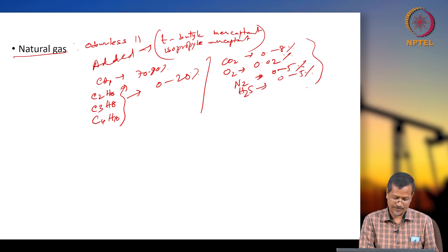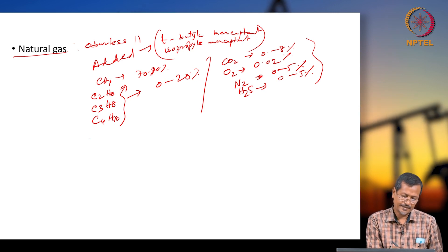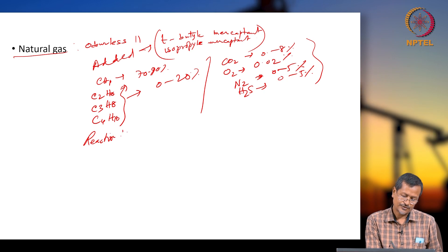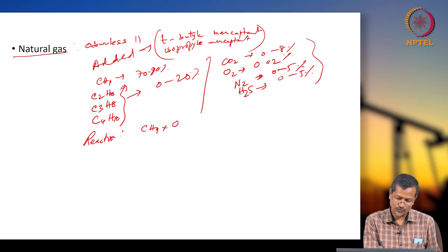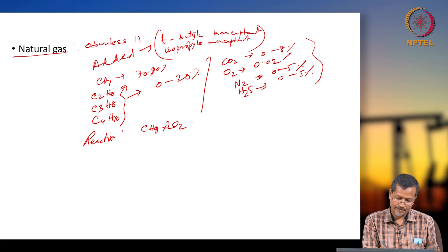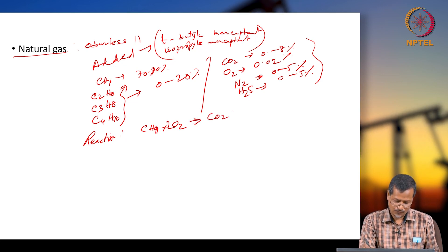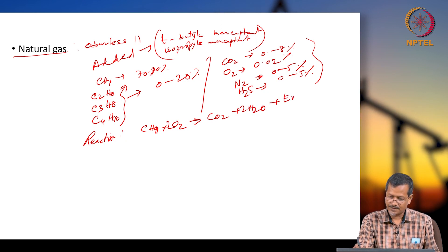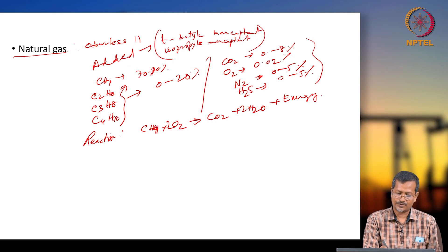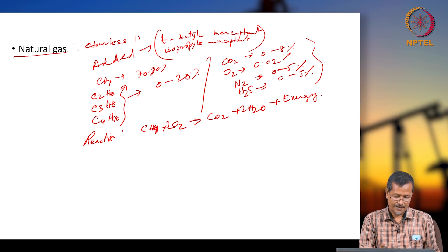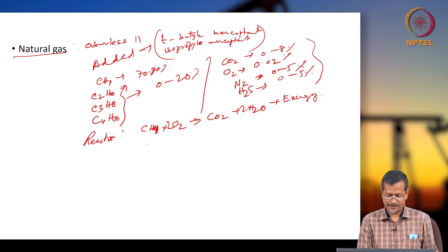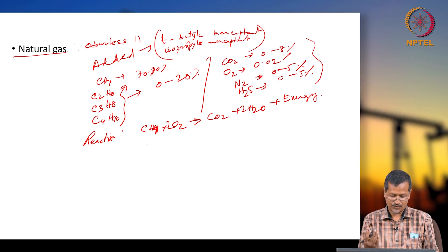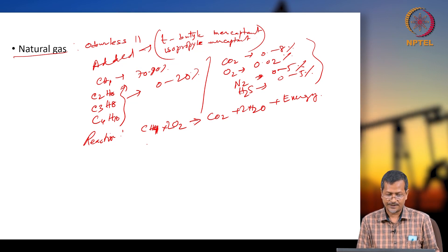H2S is dangerous when you are burning methane. The chemical reaction is: CH4 + O2 → CO2 + 2H2O + energy. You can get a huge amount of energy. Principally CH4 with some ethane and propane, and impurities such as CO2, H2S, and N2 will be there in natural gas.